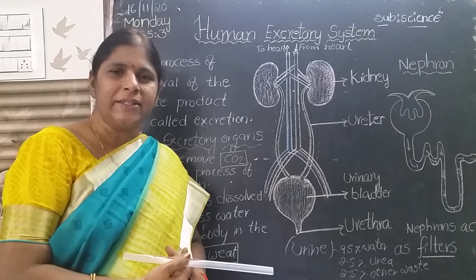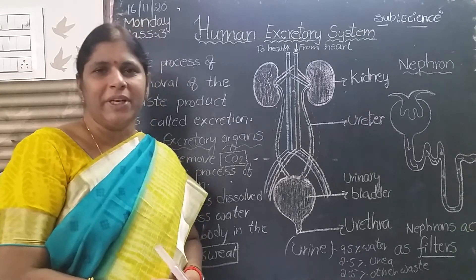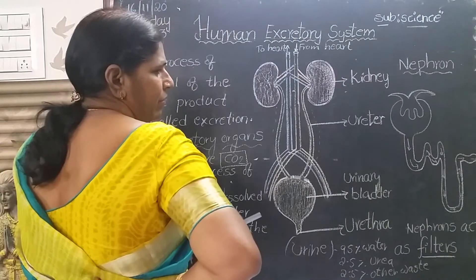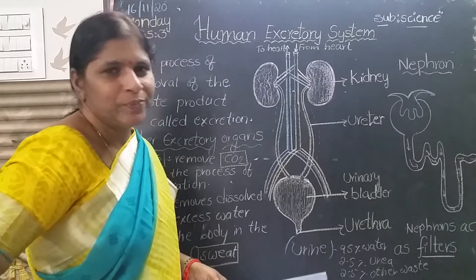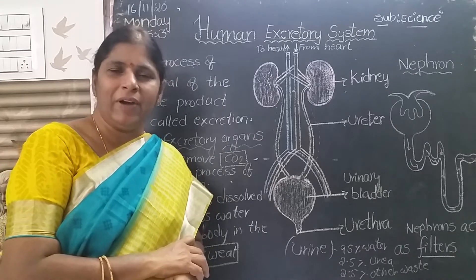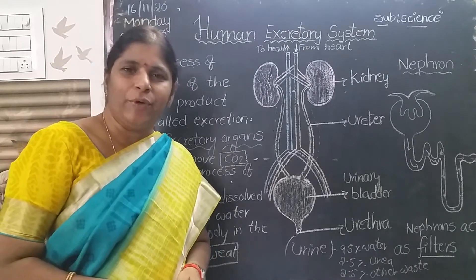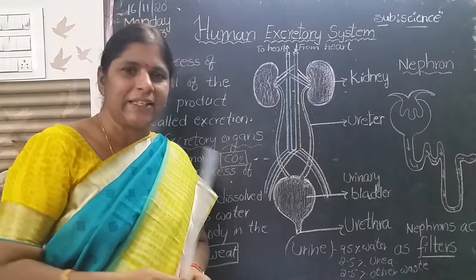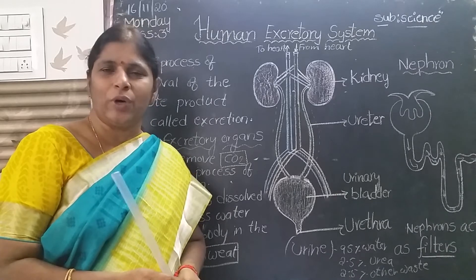Where are the kidneys located in our body? A pair of kidneys are located at the level of the waist, on either side of the vertebral column or backbone. You know the backbone — at the back of your body, it gives support to our body.